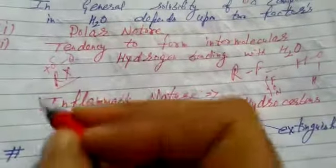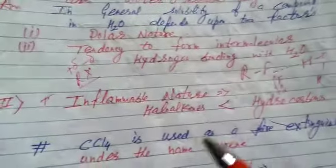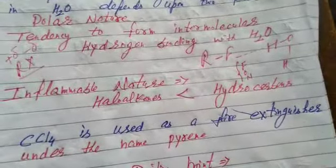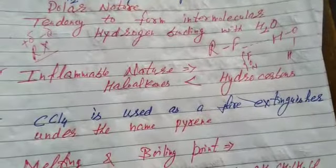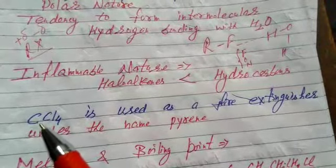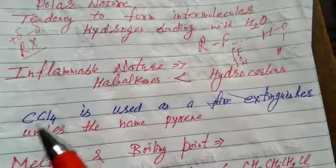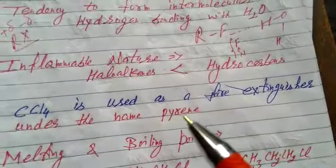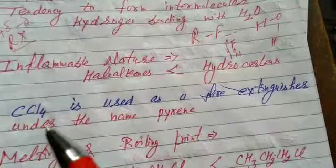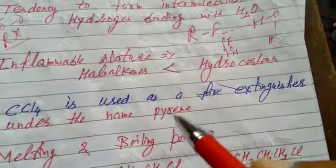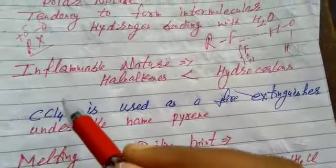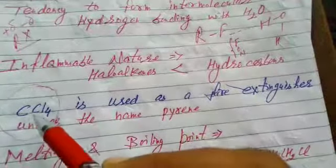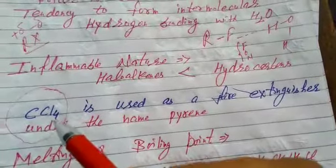After this, the second property is inflammable nature. Haloalkanes, they are less inflammable than hydrocarbons. And it is interesting, the haloalkane CCl4, carbon tetrachloride, is used as a fire extinguisher under the name Pyrene. That's again important, that's the organic compound which does not contain any hydrogen atom. Name one organic compound which does not possess hydrogen. Then your answer should be CCl4.